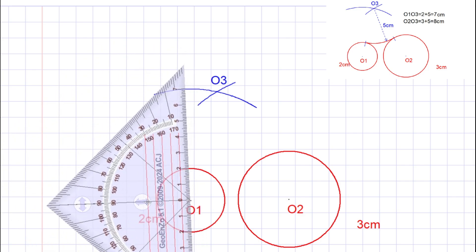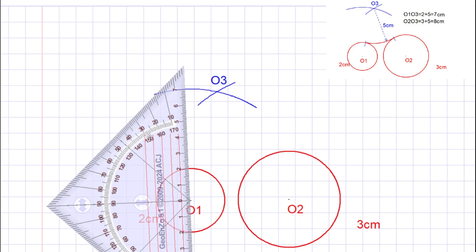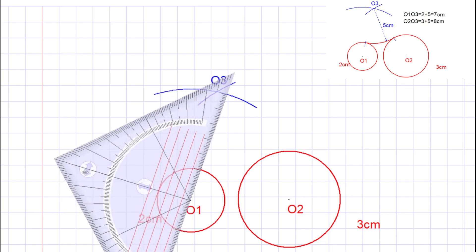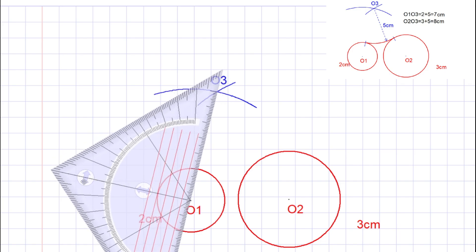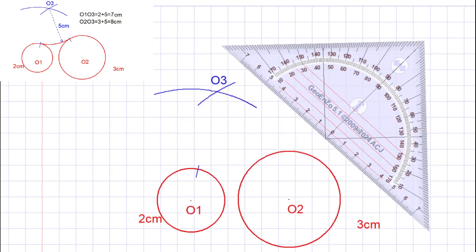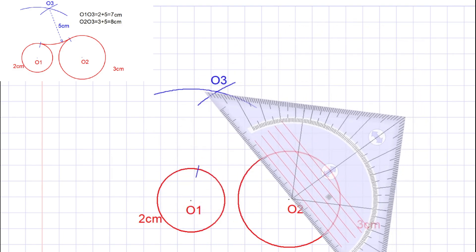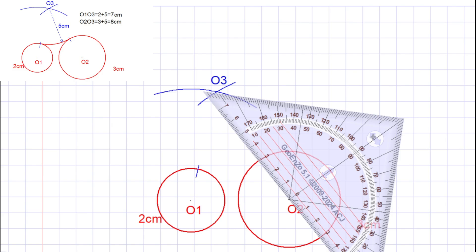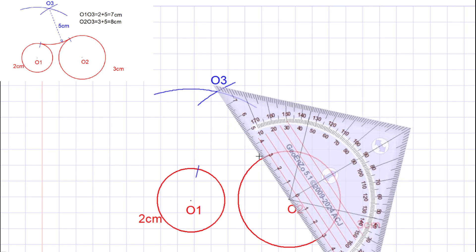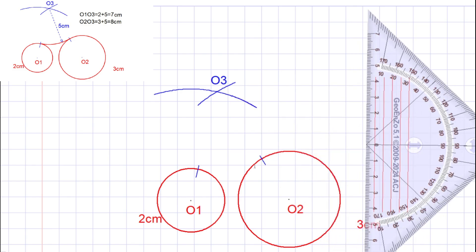Then let's find the two endpoints of the arc. To find the two endpoints, let's join O1 and O3, then mark this tangent point. Then take the O2 and O3 line and mark this intersection point. These two points are the endpoints of the arc.